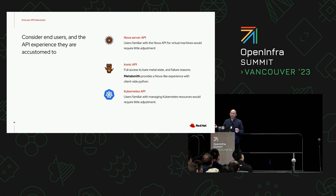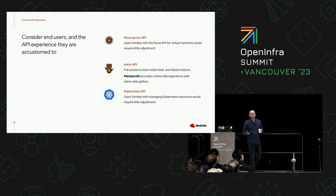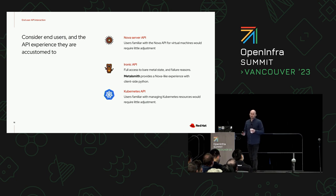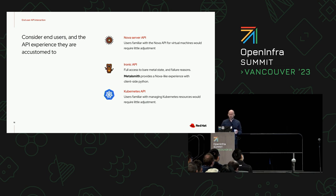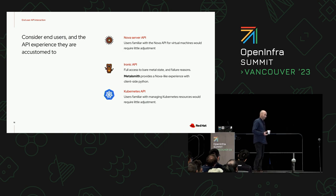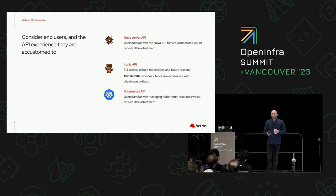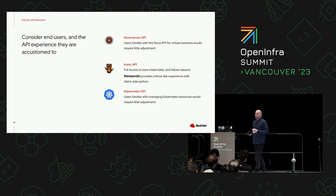Finally, there is the Kubernetes API. Increasingly our users are most comfortable managing Kubernetes resources, so being able to manage bare metal as a Kubernetes resource would be very compelling — especially for those with no exposure to OpenStack APIs at all. Anecdotally, we're hearing about people who say they don't use any OpenStack components and don't use Ironic for bare metal provisioning because they use Metal Cubed — they're actually not aware they're using Ironic under the hood, which is both good and bad.